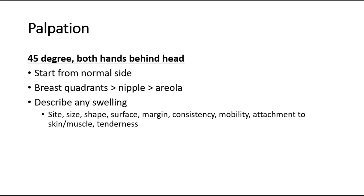Feel for the temperature and also feel for any presence of a breast lump. If there is any lump, we have to describe it, which includes: the site of the lump, the size, shape, surface, margin of the lump, consistency whether it's soft, firm, hard or rubbery, any tenderness noted, fluctuation, and also attachment to the skin or the muscle. This is for clinical staging of the breast lump.